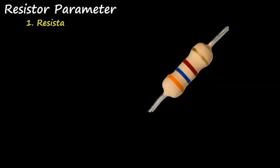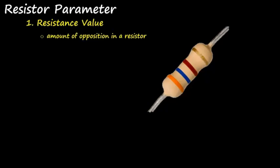Resistors have their own parameters. The first parameter is the resistance value, which refers to the amount of opposition in a resistor. It is expressed in ohms.